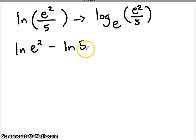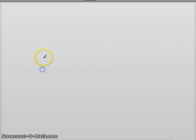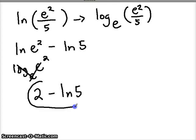We think back to our natural log properties: the natural log of e — those are inverses of each other, they cancel, and we're left with just that exponent. You can visualize it like this: the e's are inverses, they cancel, and we're left with 2. The natural log of 5 doesn't simplify further, so we end up getting 2 minus the natural log of 5.